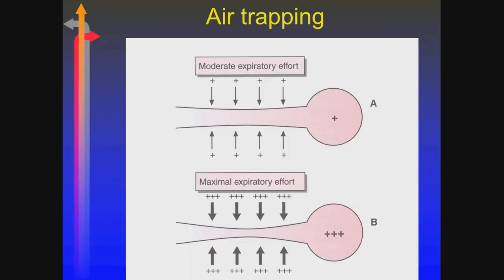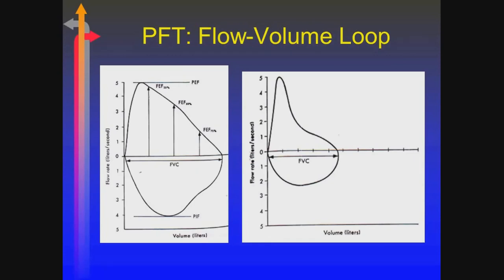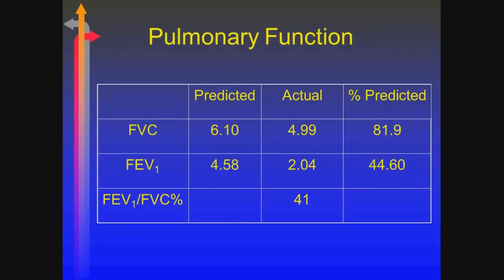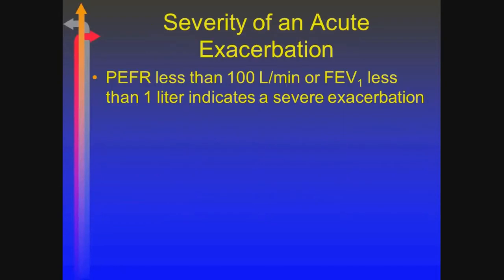The flow-volume loop shows the scooped-out pattern from dynamic compression during forced exhalation. The FEV1/FVC ratio is less than 70%, confirming obstruction. We can then look at the FEV1 to classify it as mild, moderate, severe, or very severe. Peak flows I don't put much weight on for COPD patients — I'd rather look at FEV1 since peak flows are very effort-dependent. An FEV1 less than 1 liter is probably indicative of a very severe exacerbation.